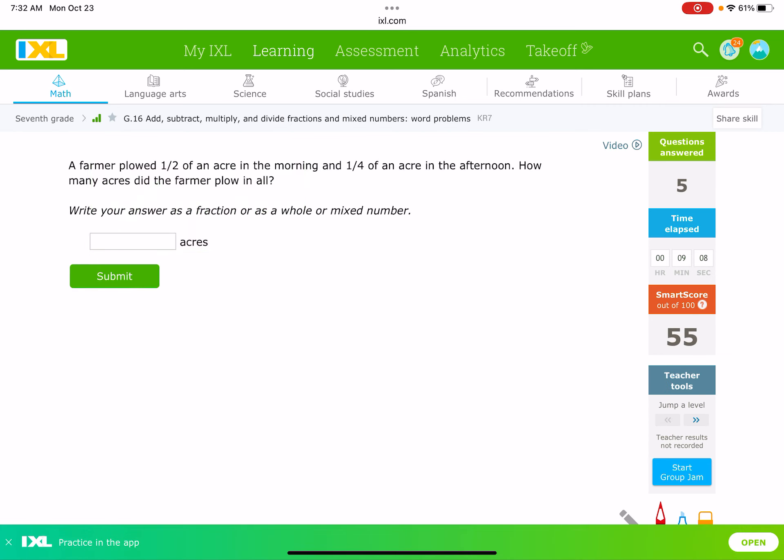All right, next one. A farmer plowed a half of an acre in the morning and a fourth of an acre in the afternoon. How many did he plow in all? So, I'm adding here ½ plus ¼. I got to get a common denominator. Well, I could do 2 times 4 is 8, but an easier common denominator would be 4, because ½ is the same thing as ¼, and all I have to do is add ¼ and ¼ together. So, I don't have to multiply those denominators. I can get the least common denominator. So, ¼ plus ¼ is ¾, and my answer here is ¾.